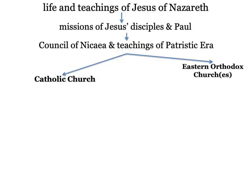The first part you've seen before. This is the early development of Christianity. It starts with the life and teachings of Jesus of Nazareth, then the missions of Jesus and Paul's disciples — they both add to the teachings. Then everybody comes together at the Council of Nicaea, once Constantine has issued the Edict of Milan, which says don't kill Christians.